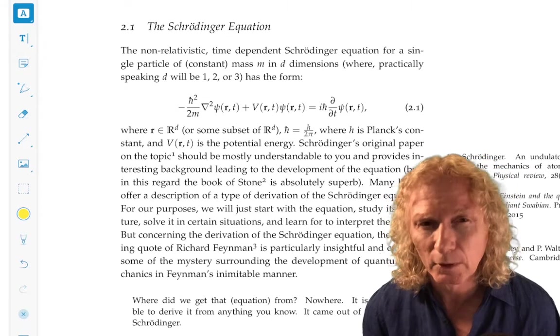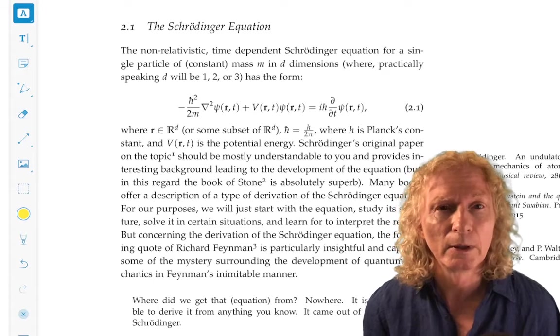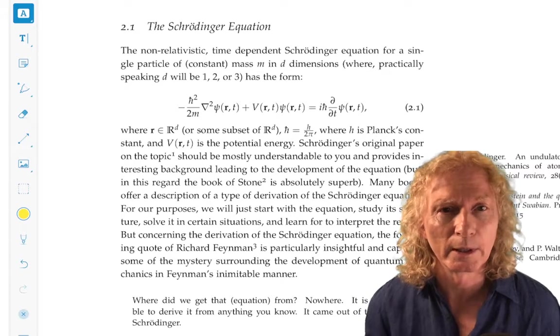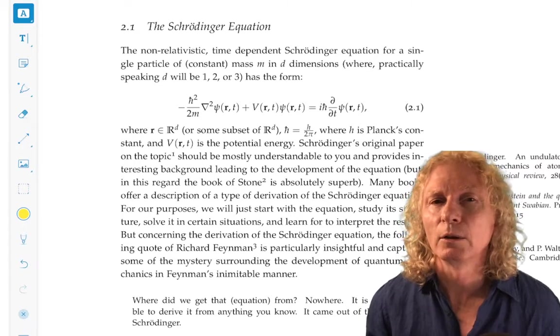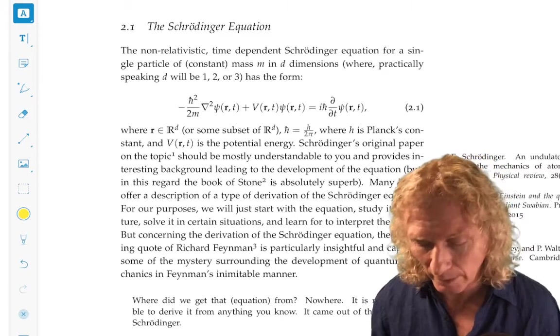So the left-hand side you've seen previously, and it looks like, well it is, the operator representation of the total energy, kinetic plus potential. And look back at earlier lectures from Chapter 1 and convince yourself of that fact.